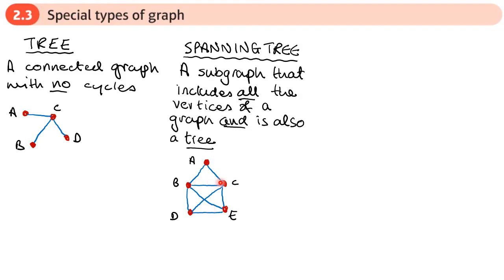So if I start with this graph, there are currently cycles in it. So ABC, for example, BCE, for example. So there are cycles there. So I want to remove edges so that it becomes a tree. So every vertex needs to be connected, but I want to make sure that there are no cycles.